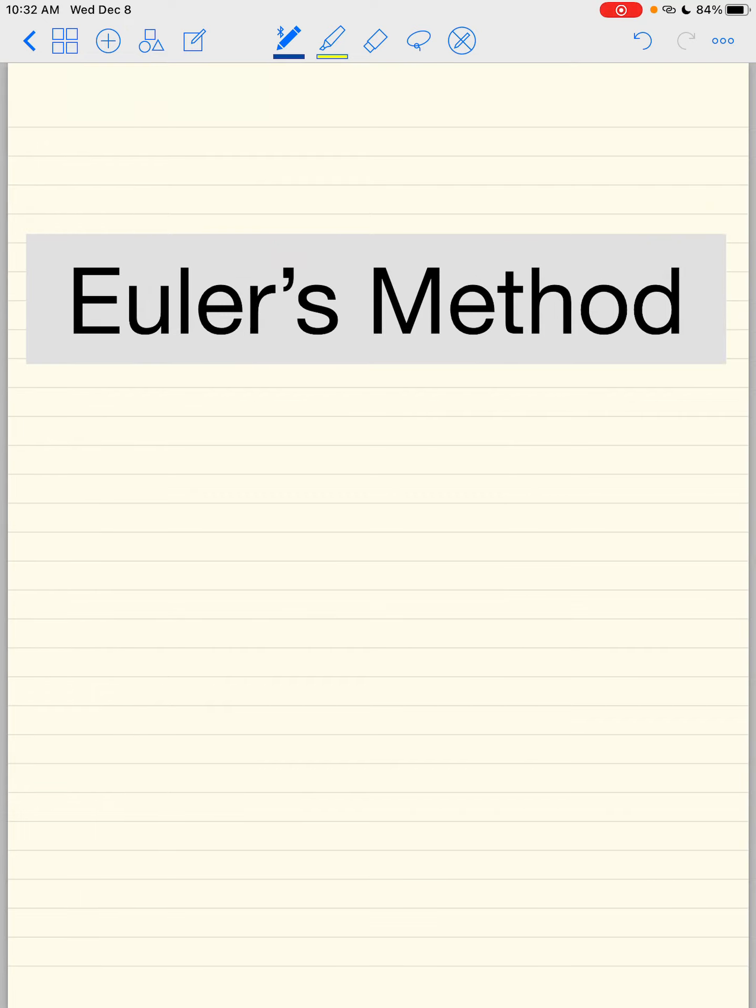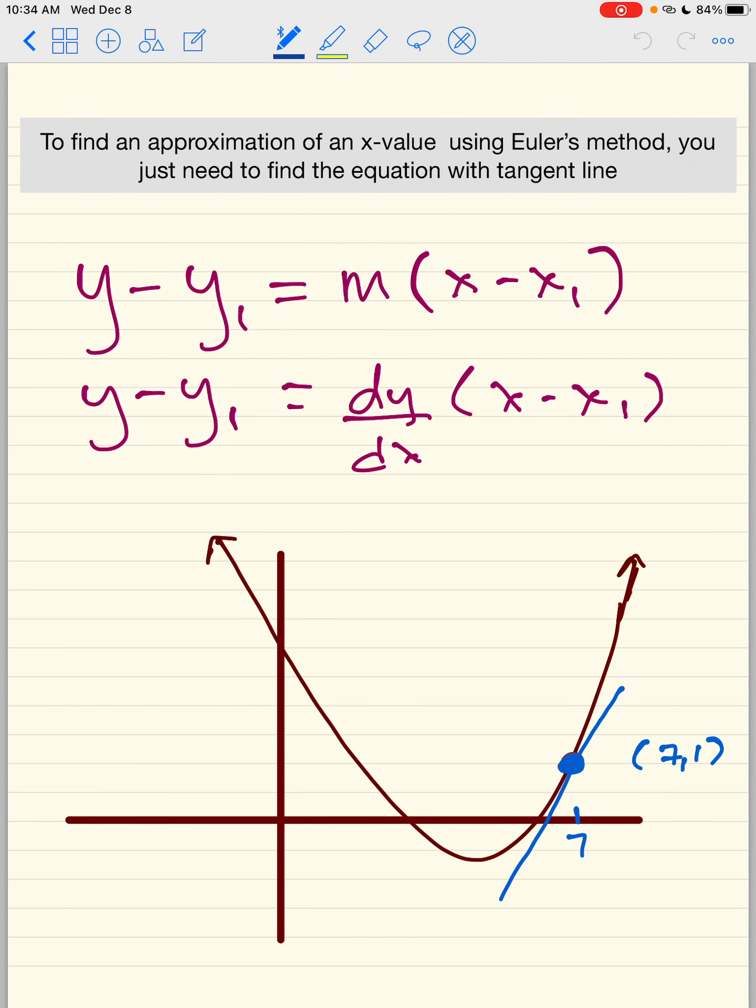So what Euler's method says is if I do more than one tangent line with smaller steps, I'm going to get a more approximate answer. So for example, I just wanted to say here, just in case you guys forgot, y minus y1 equals m times x minus x1, or y minus y1 equals dy/dx times x minus x1.